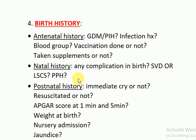For the antenatal history, you would ask the mother if she had GDM — gestational diabetes mellitus — or PIH — pregnancy-induced hypertension — at the time of pregnancy, and whether she had any kind of infection. You would ask the blood group of both parents, whether the mother had her vaccinations during that time, and whether she had taken supplements. All important antenatal questions should be asked.